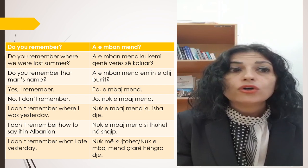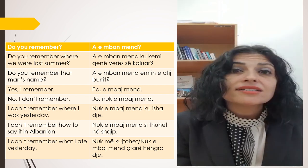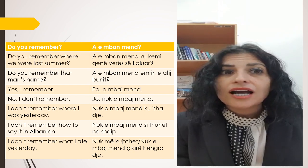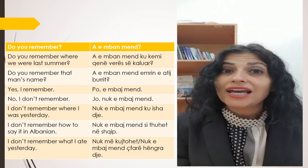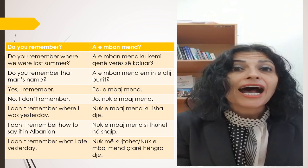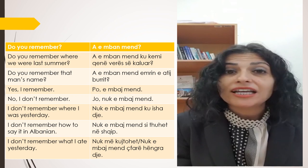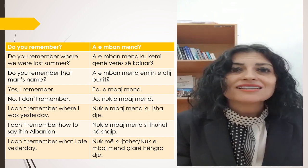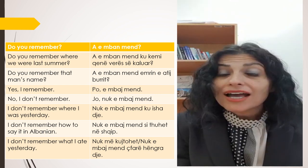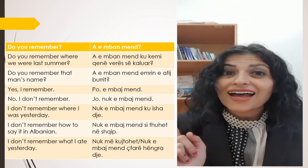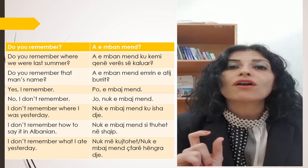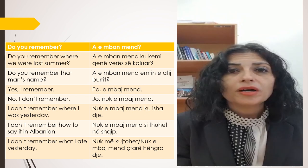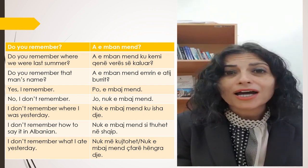Or, 'do you remember that man's name?' In Albanian: 'a e ban ment emrin e atij burri?' Yes, I remember — 'po, e ban ment' — that thing. 'E' is for that thing. No, I don't remember — 'jo, nuk e ban ment'.